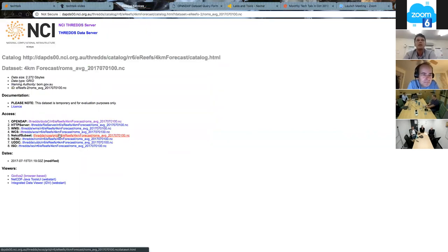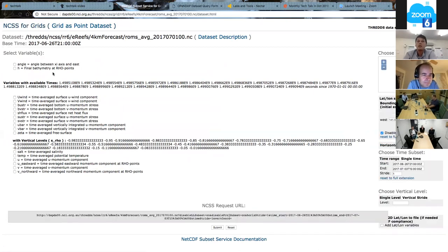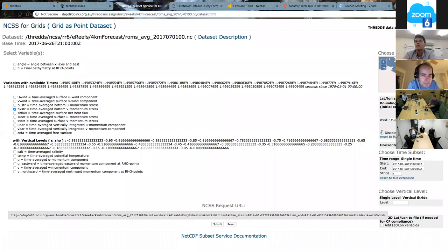Some other tools we have, the NetCDF subset. Here are all the variables contained in the file, we may only be interested in this variable. We may only be interested in a smaller bounding box, maybe an area around here. We may only be interested in a specific time range, we can adapt time range, and then make a request. So your two gigabyte file might be reduced to a few megabytes using a subset service.